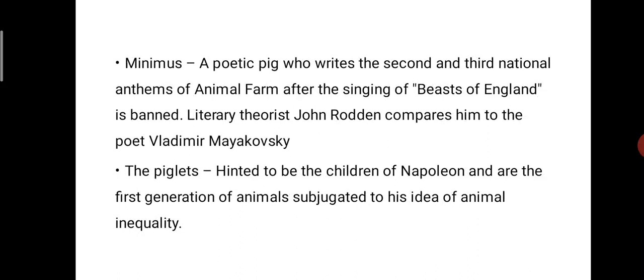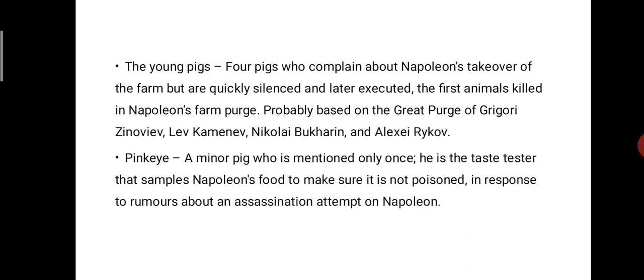Next character: Minimus, a poetic pig who writes the second and third national anthems of Animal Farm after the singing of 'Beasts of England' is banned. Literary theorist John Rodden compares him to the poet Vladimir Mayakovsky. The piglets are hinted to be the children of Napoleon and are the first generation of animals subjected to his idea of animal inequality.